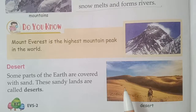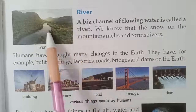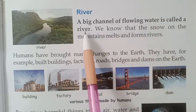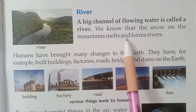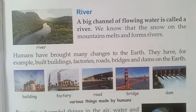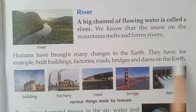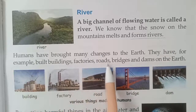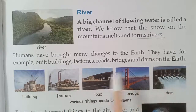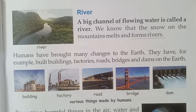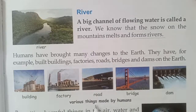In Rajasthan, places like Bikaner, Barmer, and Jaisalmer are desert areas. Now page number 83 — rivers. A big channel of flowing water is called a river. We know that the snow on the mountain melts and forms rivers, as we just now studied.